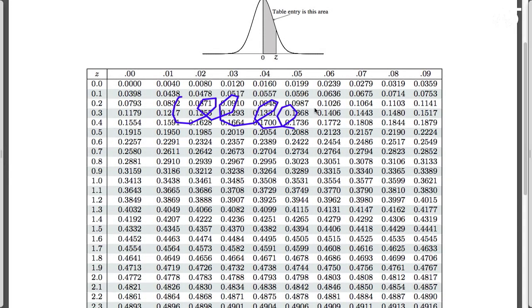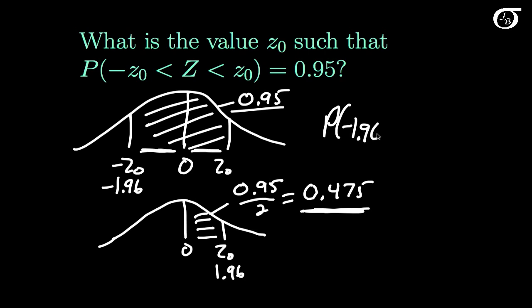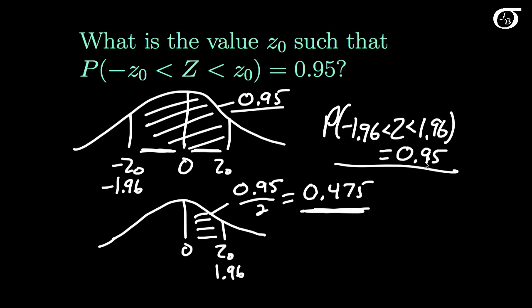We look up 0.475 in the body of the table. We find it, and that corresponds to a Z value of 1.96. So the table tells me this value is 1.96, and the value on the other side is minus 1.96. In other words, the probability that the random variable Z takes a value between minus 1.96 and 1.96 is 0.95. This is actually going to be an important value for us in statistical inference a little later on.